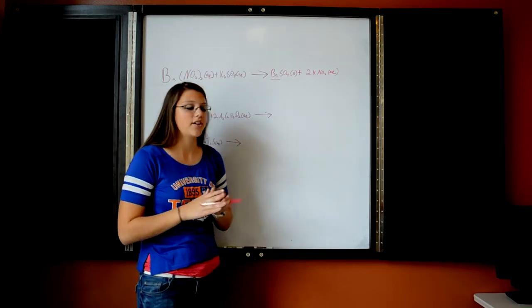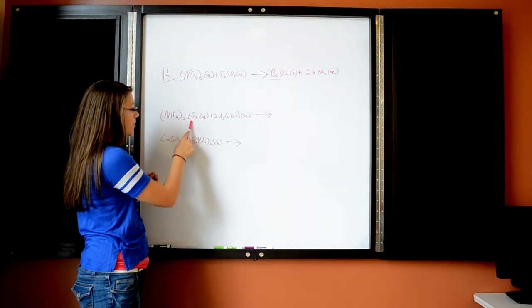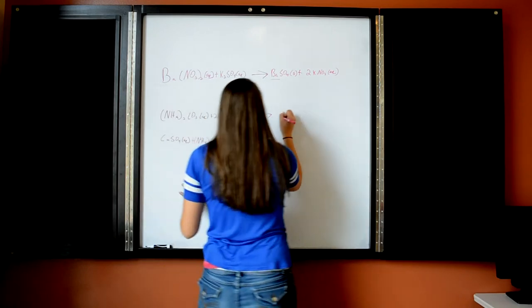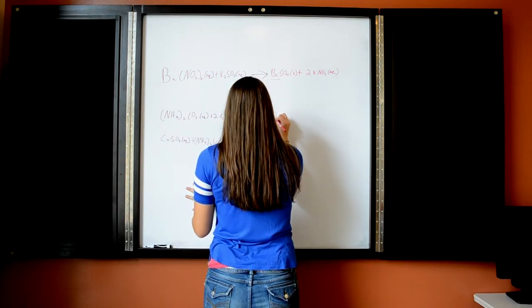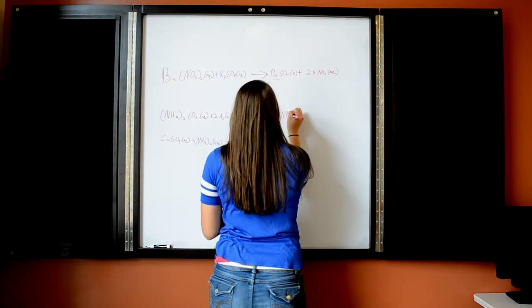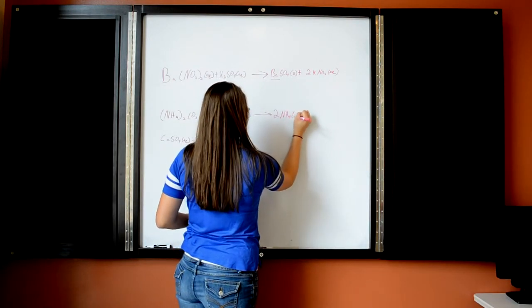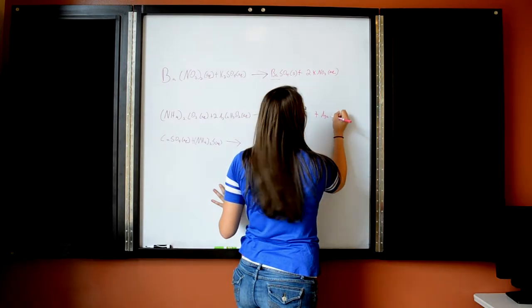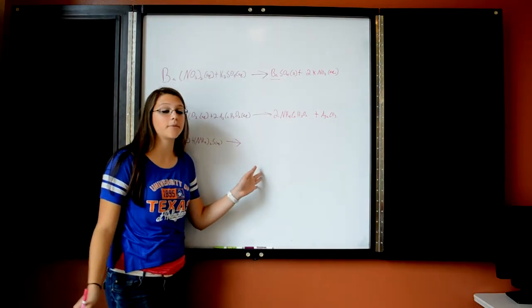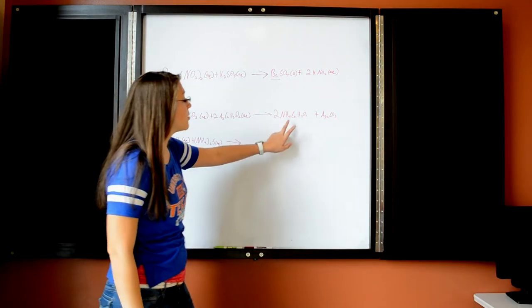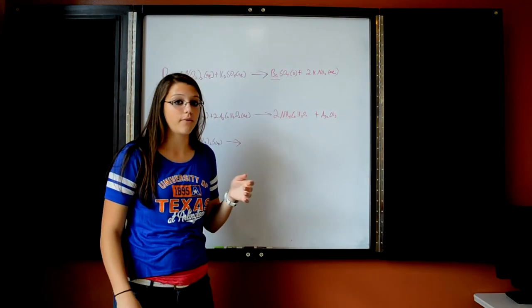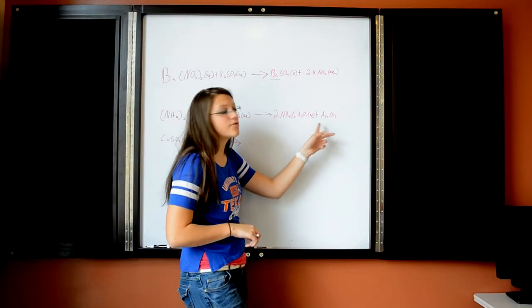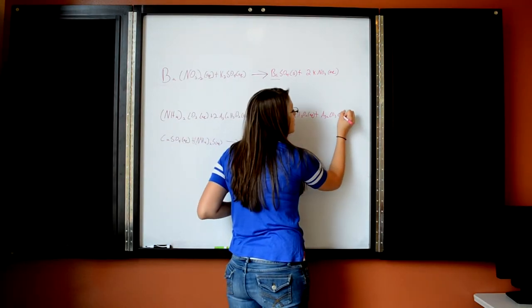Let's do a few more examples. We have ammonium carbonate plus 2 silver acetate. When mixed together, we get 2 ammonium acetate plus silver carbonate. We need to determine whether they're aqueous or solid. Both ammonium and acetate are always soluble, so ammonium acetate is aqueous. However, carbonate and silver are both usually insoluble, so silver carbonate is a solid.